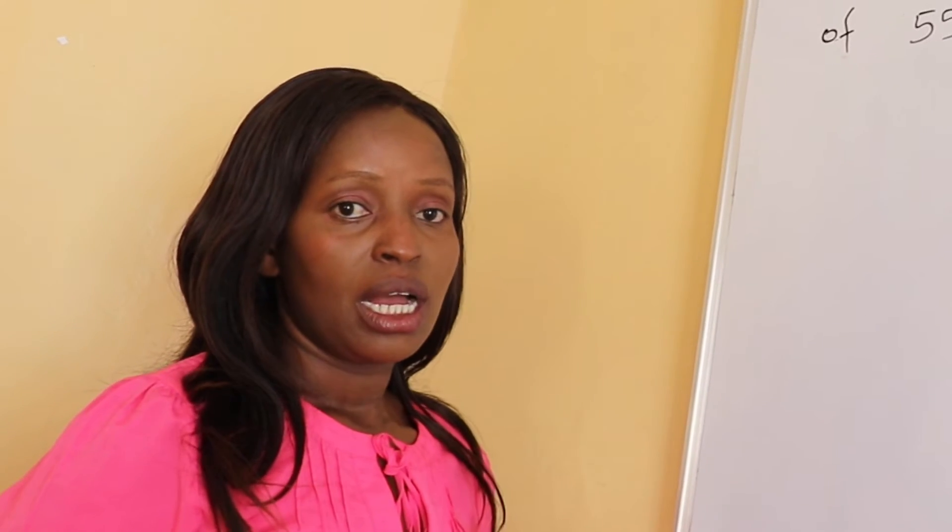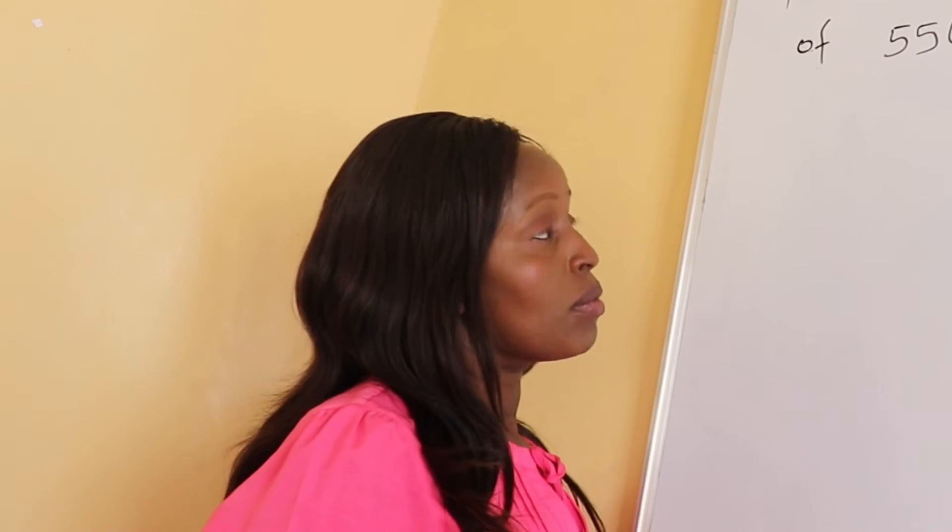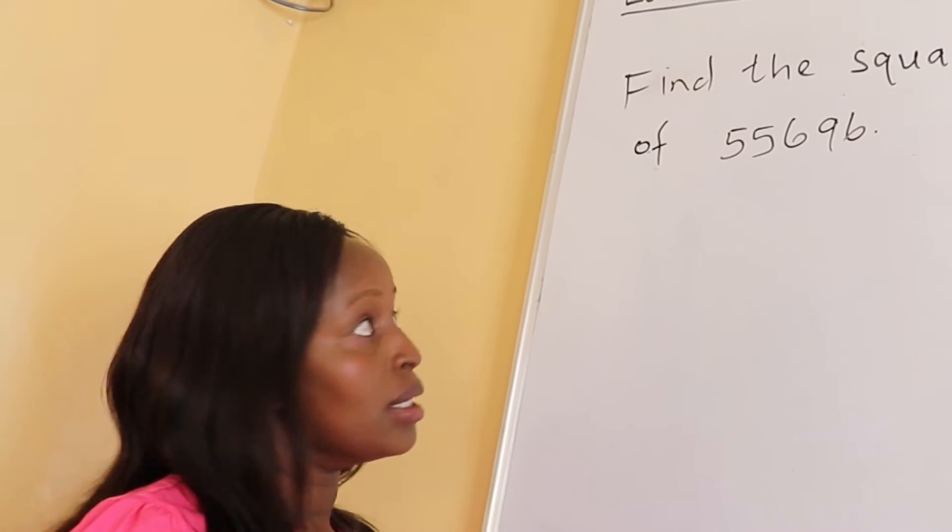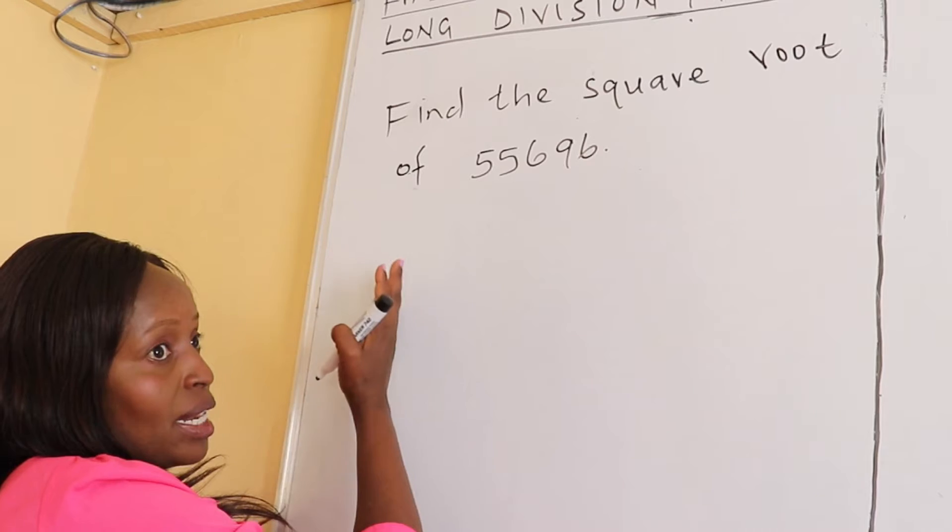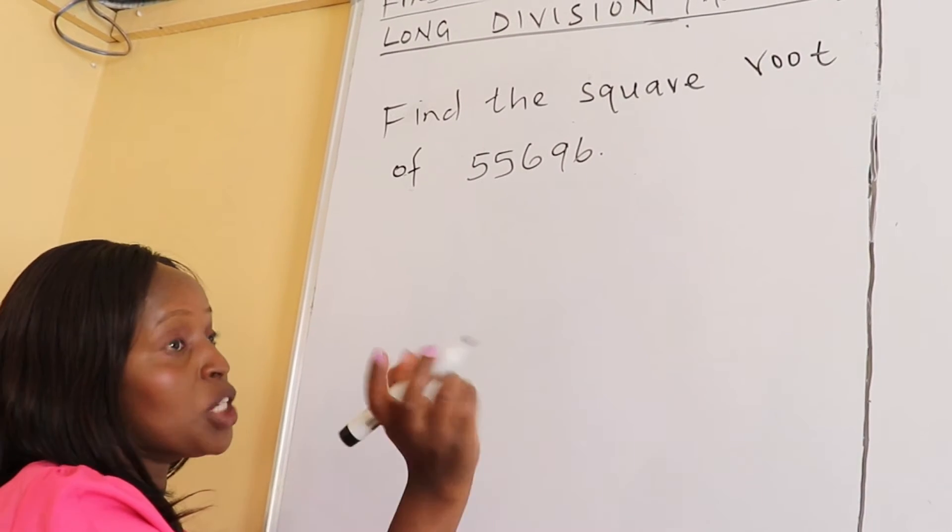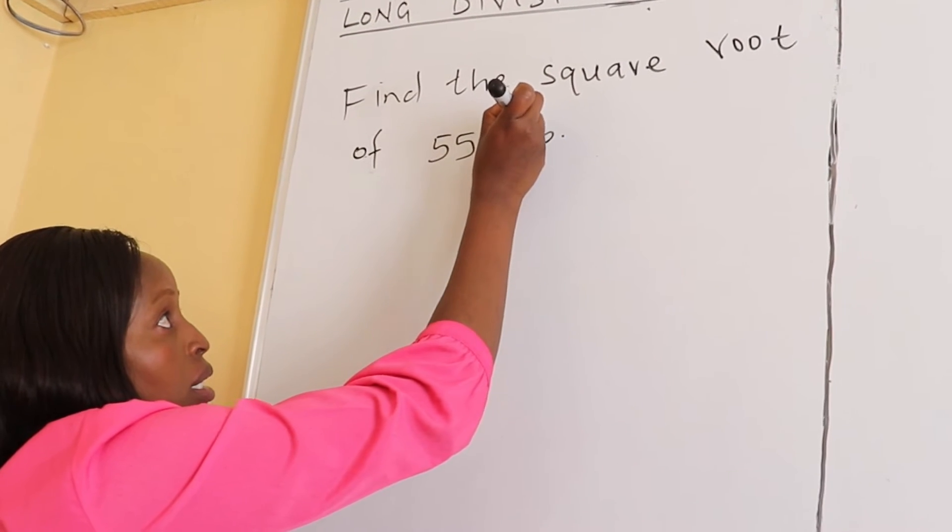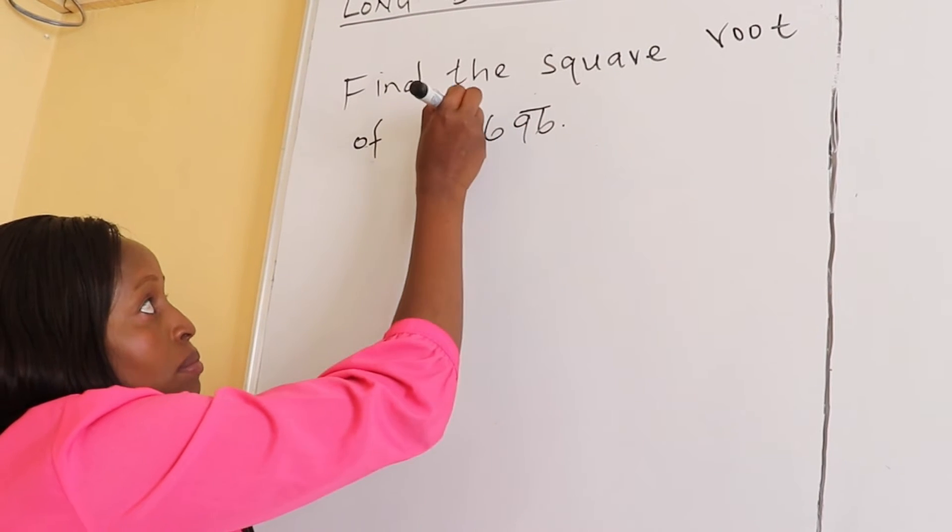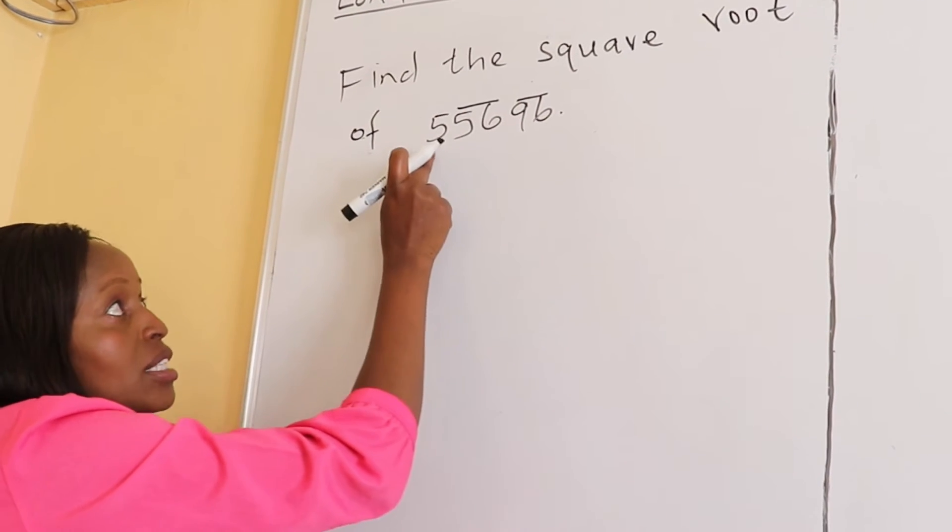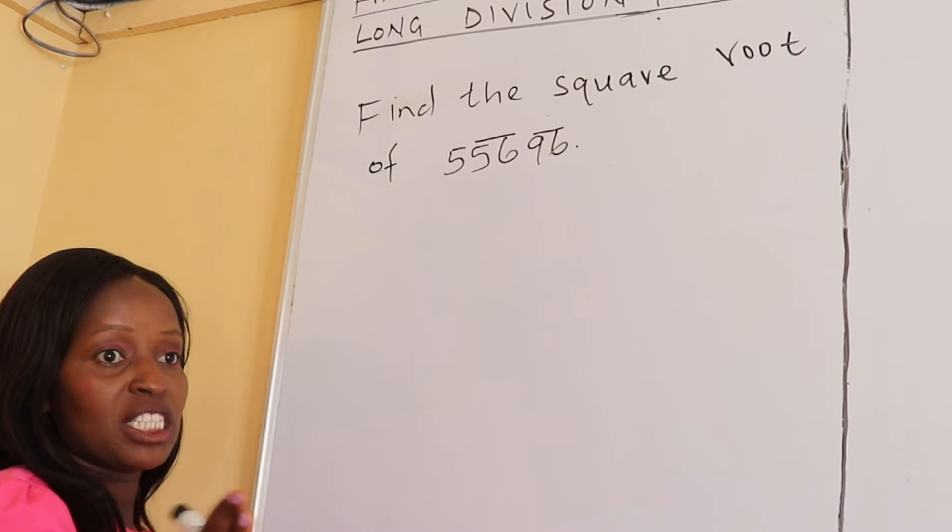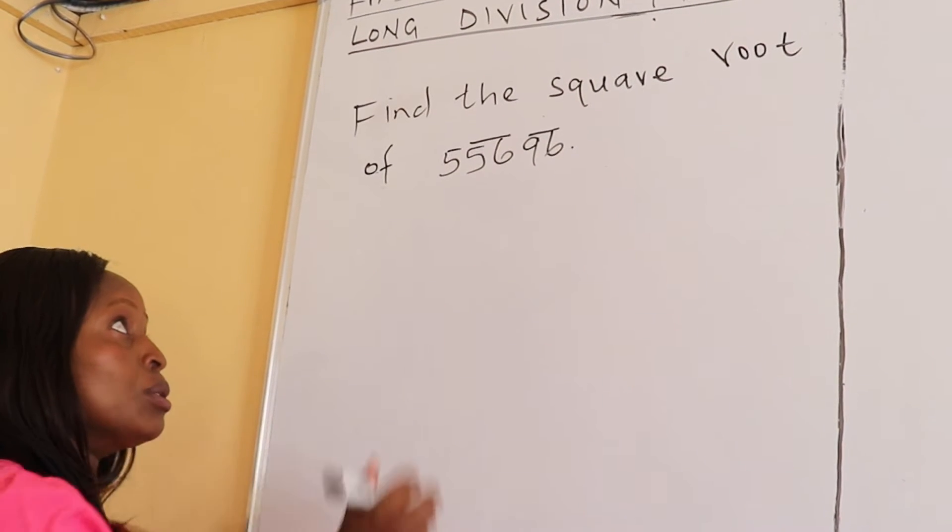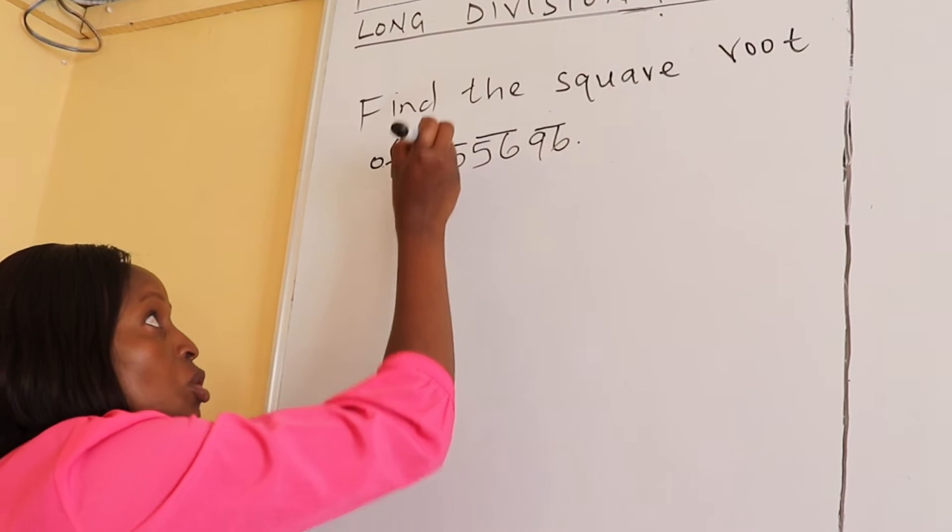Given a number like this one, to find the square root, step one is to pair the digits starting from the right towards the left. Pairing means you pick two digits - that's one pair, a second pair. But this digit doesn't have a partner, so you leave it like that. After that, step two is to draw the long division sign.